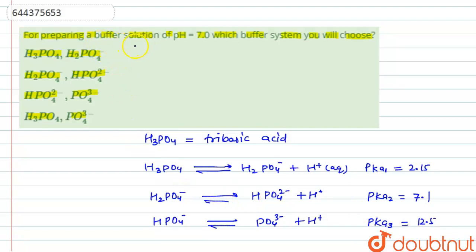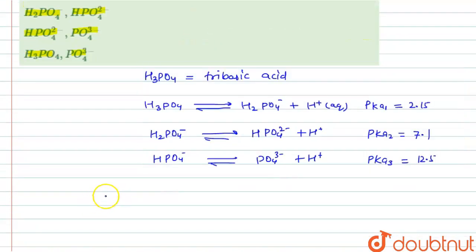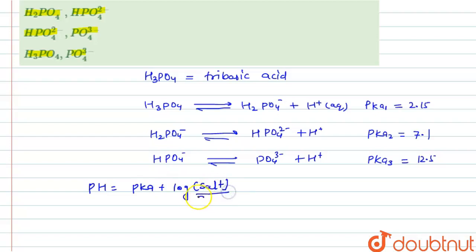First, let's understand buffer solutions. Buffer solutions are those solutions where, when we add a small amount of acid or base, there is no change in pH. The formula for the pH of a buffer solution is: pH = pKa + log([salt] / [acid]).